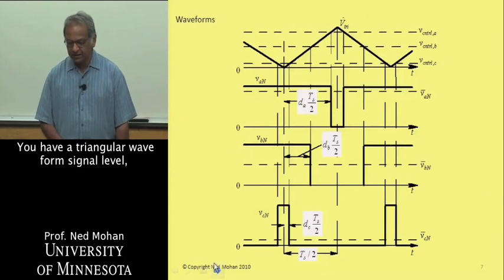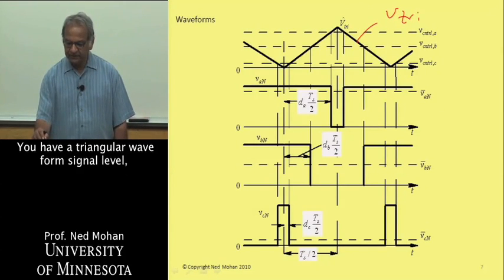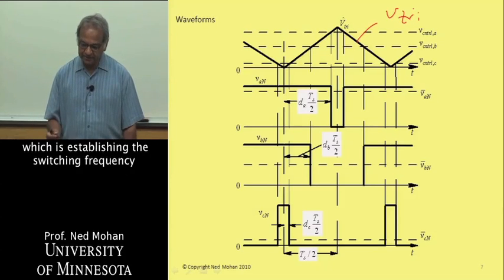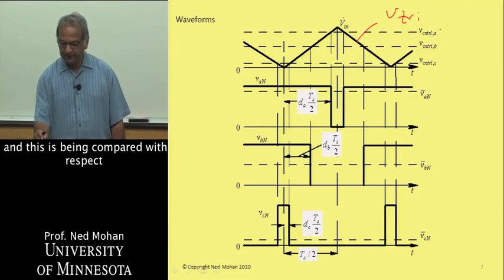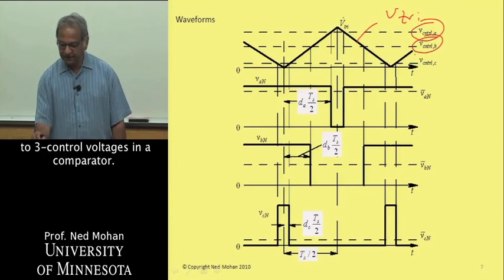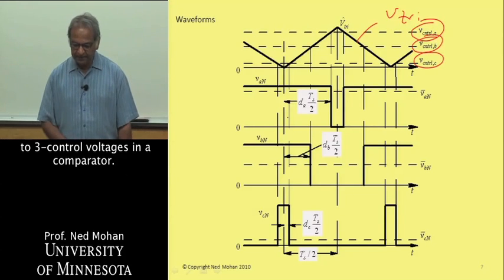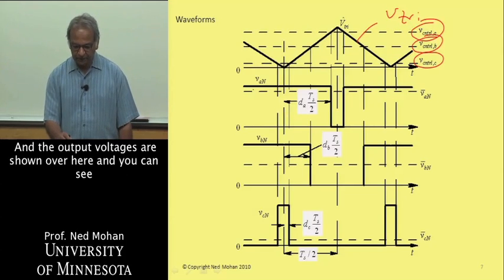The waveforms are shown here. We have a triangular waveform signal level which is establishing the switching frequency. This is being compared with respect to three control voltages in a comparator, and the output voltages are shown over here.